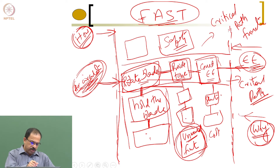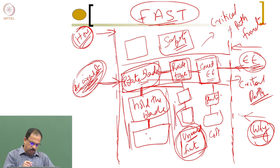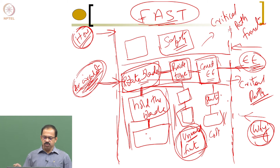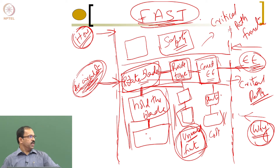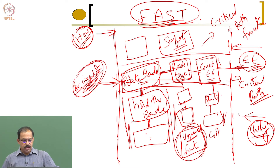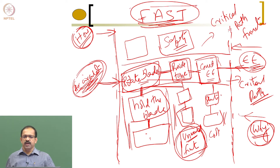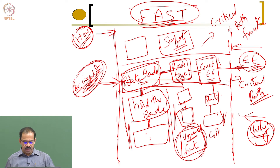This way you will be able to get all the functions in a product using this method. That is known as FAST, or Functional Analysis System Technique, and it is one of the very common methods used for functional decomposition.